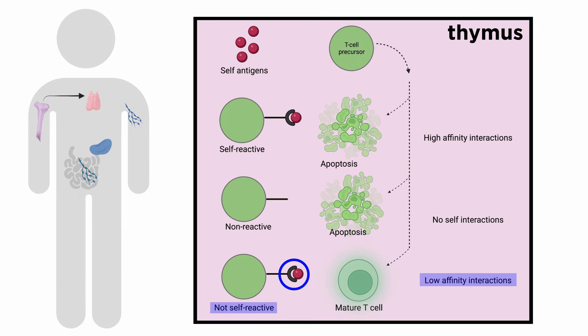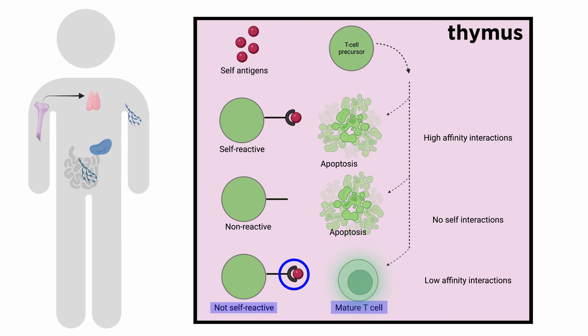In contrast, those cells bearing low affinity TCR survive, are selected for, and differentiate into mature T cells. This process is referred to as positive selection. This extremely essential step ensures that only those T cells that are self-tolerant survive, whereas self-reactive T cells are eliminated.